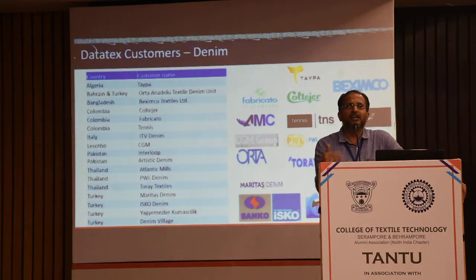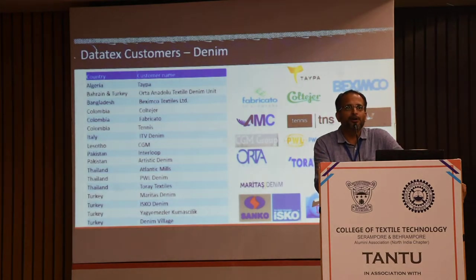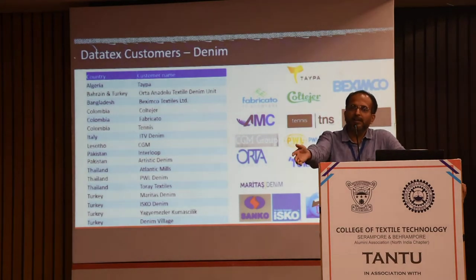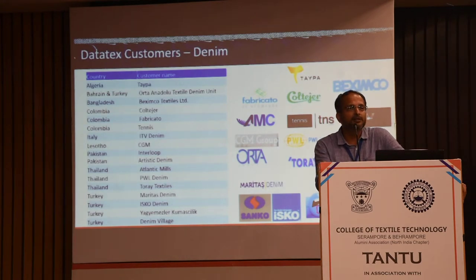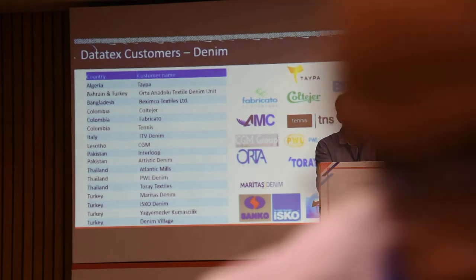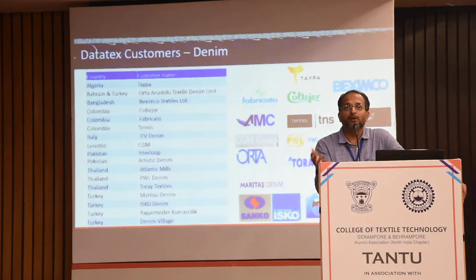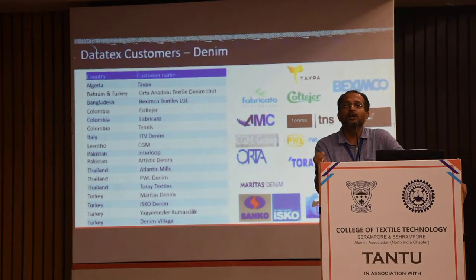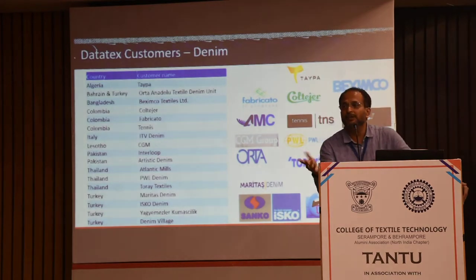There are various aspects when looking at how we define the product, production capacities, and the basic understanding of production. For example, a particular fabric can be created on three different kinds of machines, each with different costs, consumption, and speeds. If I produce in Plant A the speed is different from Plant B, but the fabric is the same. All those details must come up in the solution — it has to have that configurability to fit any organization requirement, whether it's a spinner, weaver, or garmenter.